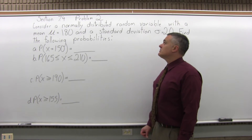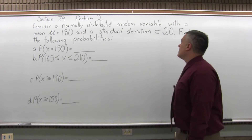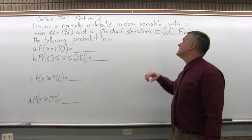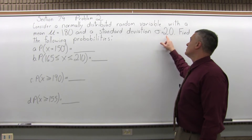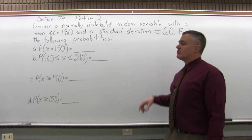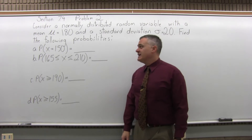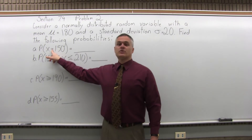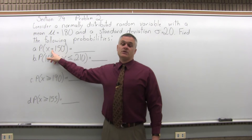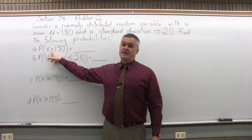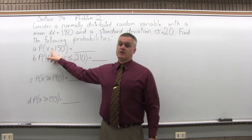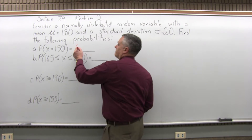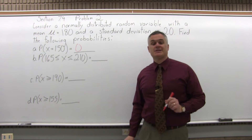This problem considers a normally distributed random variable with a mean mu equal to 180 and a standard deviation sigma equal to 20. We need to find the following probabilities. Part A asks for the probability that X is exactly equal to 150. For this type of problem, when you have an exact value, the answer is automatically 0 — no work needed.